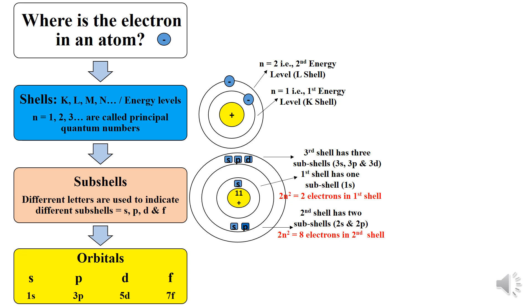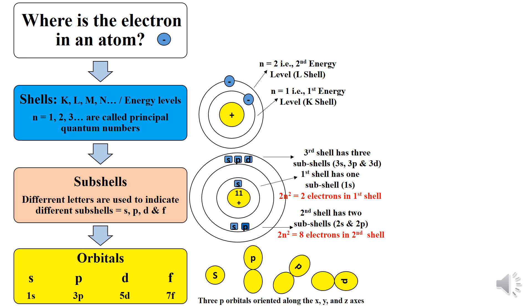Within the subshells you find the orbitals. The S subshell has 1s orbital, the P subshell has 3p orbitals oriented along the x, y and z axis. The D subshell has 5d orbitals and the F subshell has 7f orbitals. The number of electrons in an orbital can be 0, 1 or 2 — no more than 2.